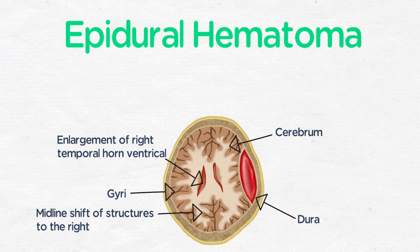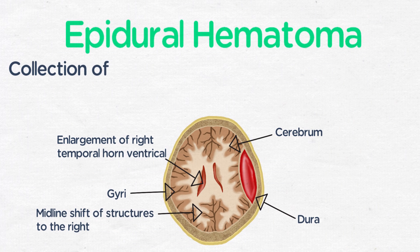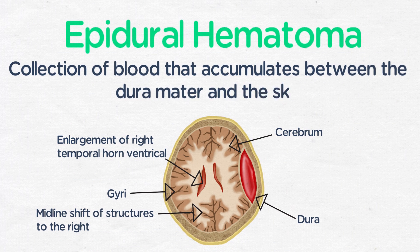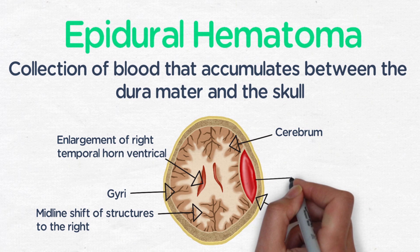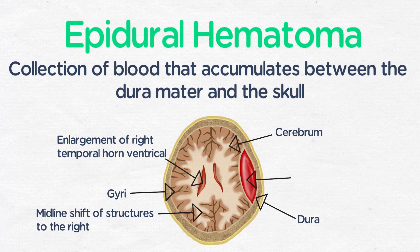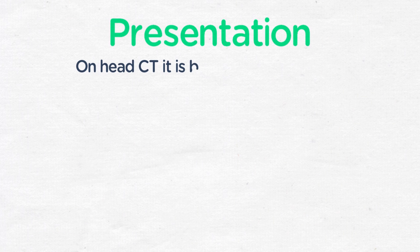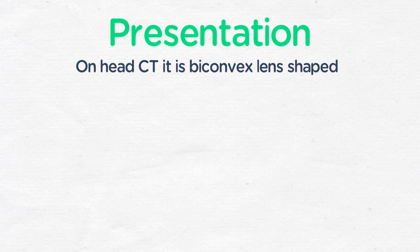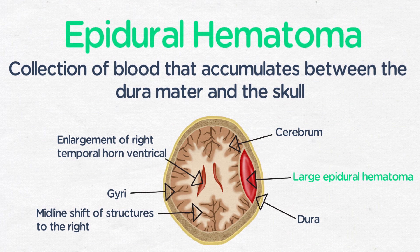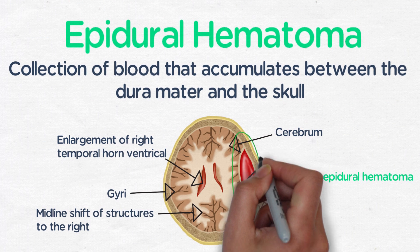An epidural hematoma is a collection of blood that accumulates between the dura mater and the skull. It typically originates from damage to the meningeal arteries and is most frequently associated with trauma. On a head CT, it is biconvex or lens-shaped, and it will not cross the suture lines due to the tight attachment of the dura at those points.